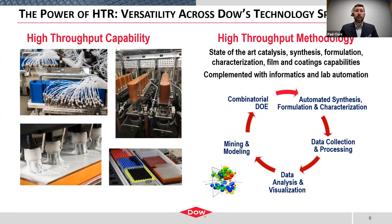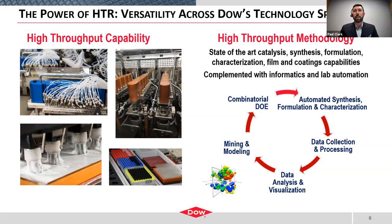The methodology that Dow has developed over the last 15-plus years of executing high-throughput research is really a refined system that allows us to maximally utilize our tools. The way that we think about our state-of-the-art catalysis, synthesis, formulation, characterization, film, and coatings capabilities is integrated across all of the business envelopes. It's complemented with informatics and lab automation expertise within core R&D, which allows us to diversify those tools even beyond their original capabilities. The iterative cycle — combinatorial DOEs, automated synthesis, formulation and characterization, data collection and processing, analysis and visualization, mining and modeling — has been refined over those years to dramatically accelerate our research and innovation efforts.